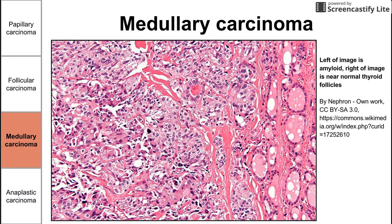On histology for medullary carcinoma, on the left of the image you can see quite a lot of amyloid — a bed of pink that the cells are sitting on. Looking to the right portion of the image, we see what looks closer to normal thyroid follicles, contrasting the medullary carcinoma with normal thyroid tissue.